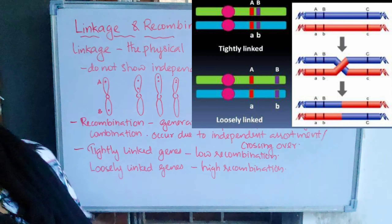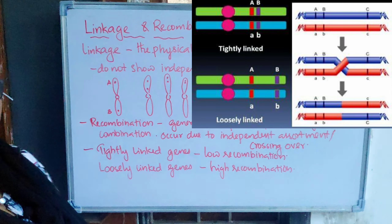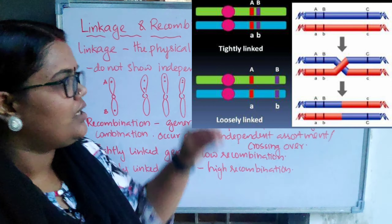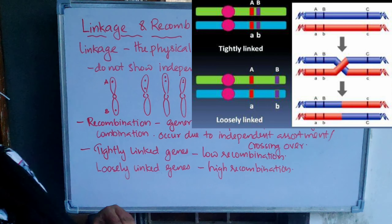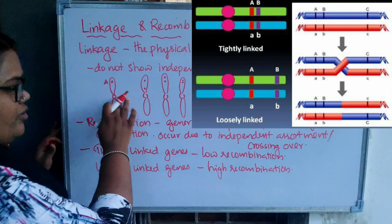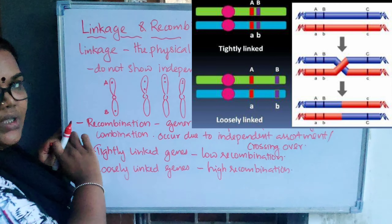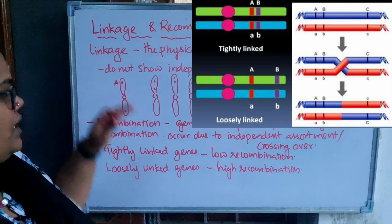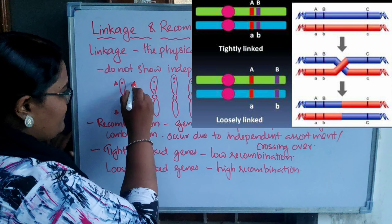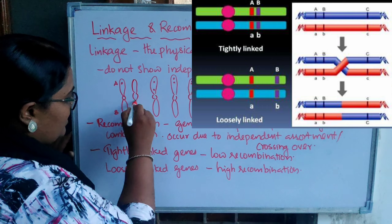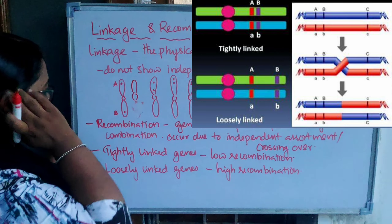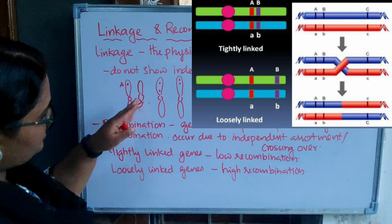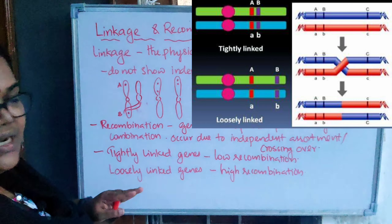So here we are going to learn about linkage and recombination. What do we mean by linkage? Linkage is the physical association of two or more genes on a chromosome. As an example, consider a chromosome with two genes A and B. If crossing over takes place and the genes are far apart, the chances of separation of these two genes are really more — they will obviously be separated.